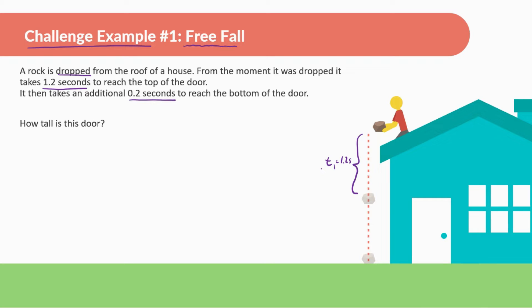It then takes an additional 0.2 seconds to reach the bottom of the door, so I'm going to call time 2 equal to 0.2 seconds. How tall is this door? There are multiple ways of doing this. What I'm going to be doing is taking the whole time from the top to the bottom of the door — the total time, which I'll call t-total, equals 1.4 seconds — and I'm going to find how much it fell during that 1.4 seconds.